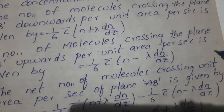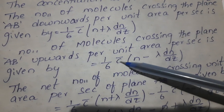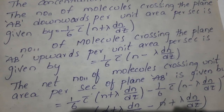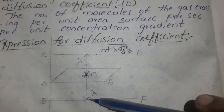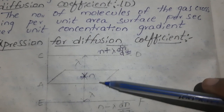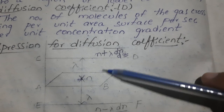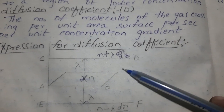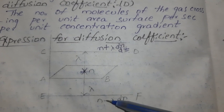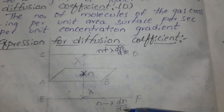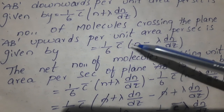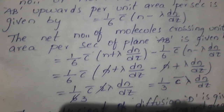The number of molecules crossing the plane AB upwards per unit area per second is given by 1 by 6 times c-bar times n minus lambda into dn by dz.